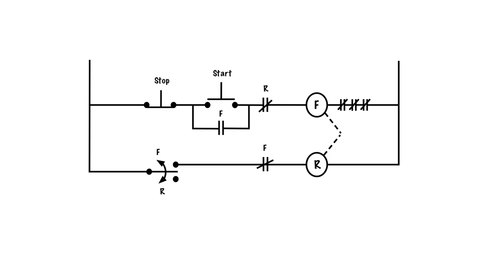So let's go ahead and hit the start button and see what happens. As we hit start, power can now get through. There's a normally closed interlock there, but it can get through because it's closed, energizes F, goes through the overloads.